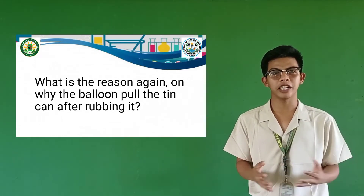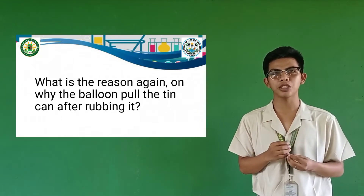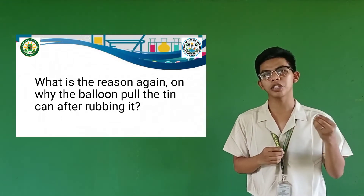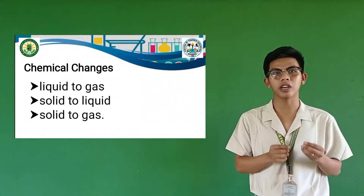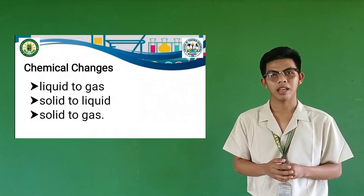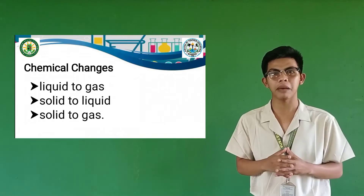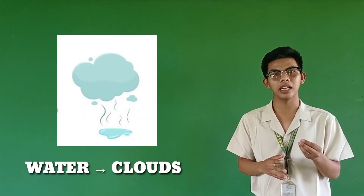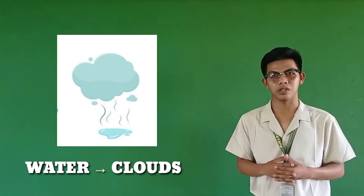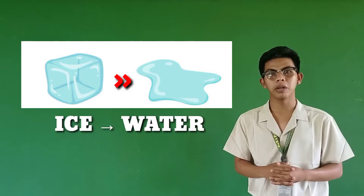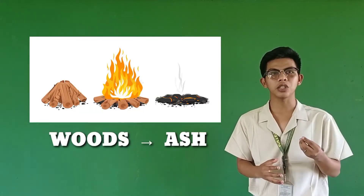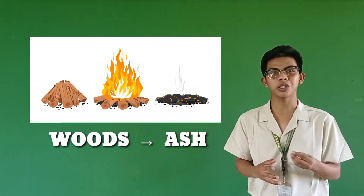I think everybody already learned the structure of an atom. But what happens to an atom if matter changes from solid to liquid, liquid to gas, or gas to liquid? Nothing happens to an atom during chemical changes — the only change is their physical appearance. For example, liquid to gas happens during the water cycle where water rises to the atmosphere and forms into clouds. Solid to liquid occurs when an ice cube is exposed to high temperature and melts into liquid form. And lastly, when a bunch of wood is burned, it turns into ash — that's solid to gas change.